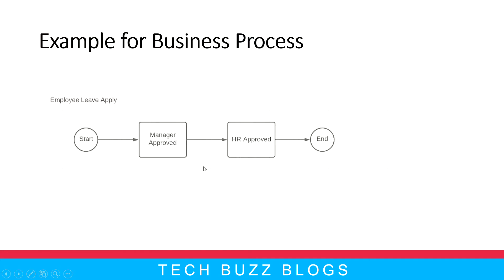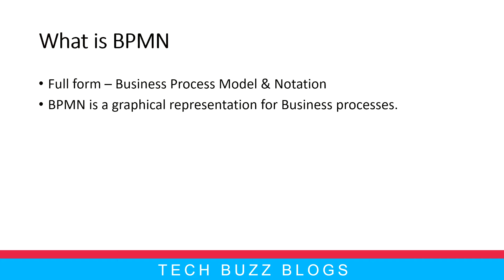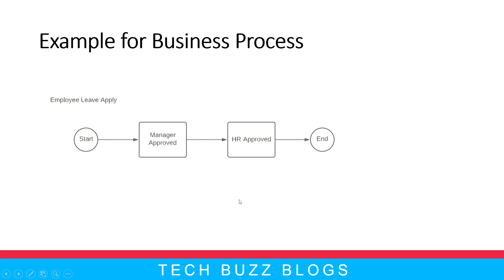Whatever I am explaining, this is what we are seeing on the screen. This is called a process — a single business process. Whenever you start a new request, it goes for manager approval, then HR approval, and then it ends. This is called a BPMN model — Business Process Model and Notation diagram.